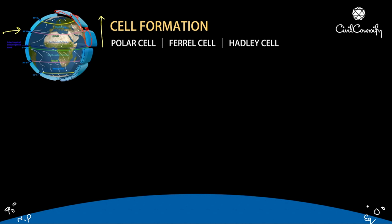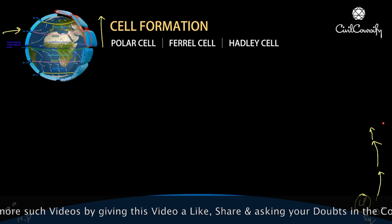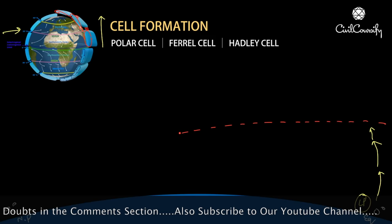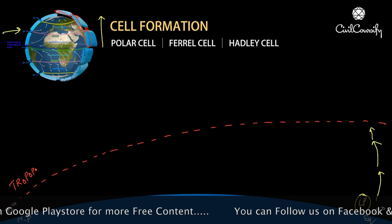The equator is the most warm region — it has the highest average temperature throughout the year. The primary reason is maximum insolation, which causes low pressure in this region. Now, what is the tropopause? The tropopause is the junction between the troposphere and the stratosphere.